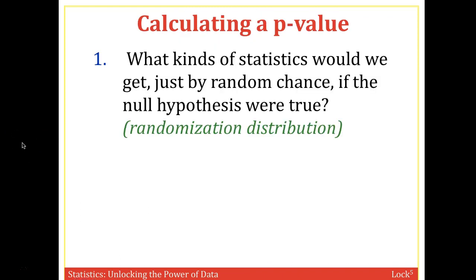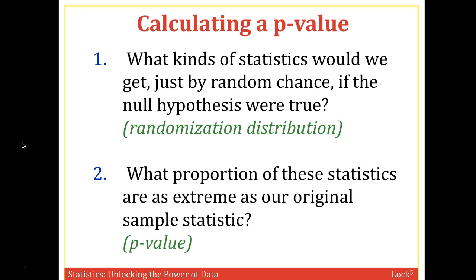What kinds of statistics would we get just by random chance if the null hypothesis were true? And what proportion of these statistics are as extreme as our original sample statistic? For Chapter 4, calculating the p-value means creating a randomization distribution via StatKey and then computing a p-value.